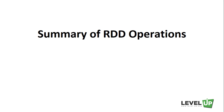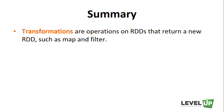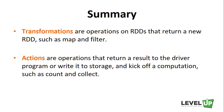In the previous lectures, we have seen RDDs support two types of operations: transformations and actions. Transformations are operations on RDDs that return a new RDD, such as map and filter. Actions are operations that return a result to the driver program to write it to storage and kick off a computation, such as count and collect.